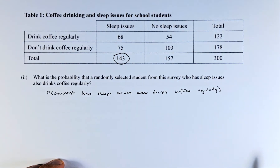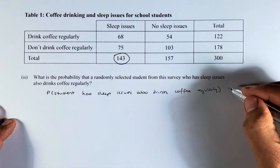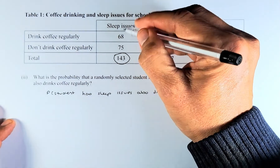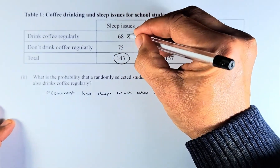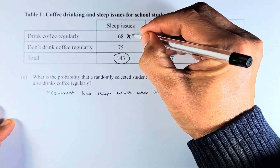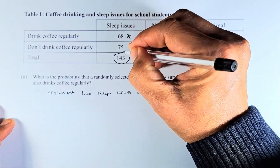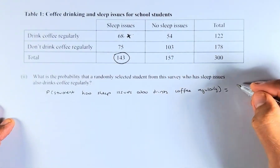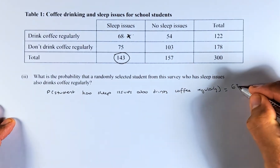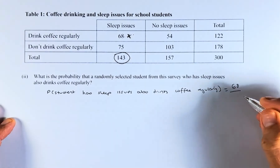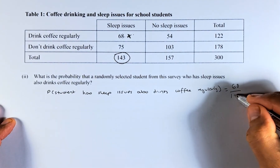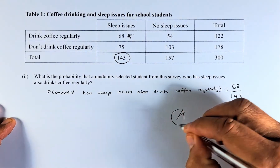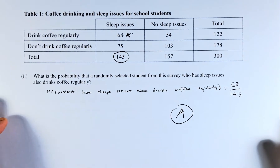We want those who have sleep issues and drink coffee regularly — that is 68. So the probability is 68 out of 143, the total number of people who have sleep issues. Again, that is a simple achievement.